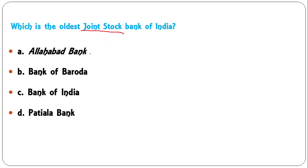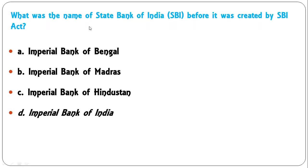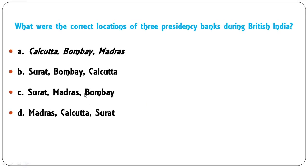What was the name of State Bank of India before it was created by the SBI Act — Imperial Bank of Bengal, Imperial Bank of Madras, Imperial Bank of Hindustan, or Imperial Bank of India? Before making it SBI, it was the Imperial Bank of India, so D is the correct answer.